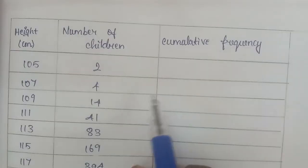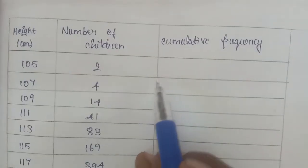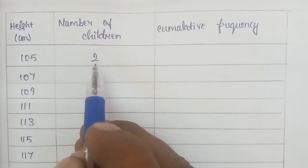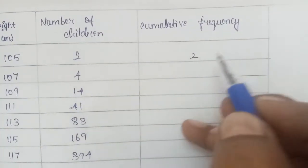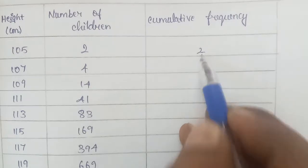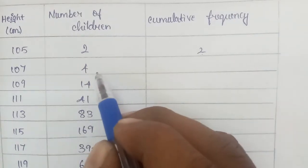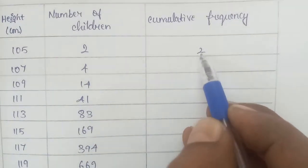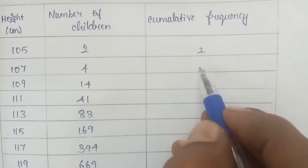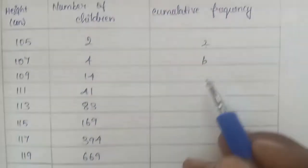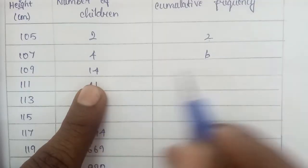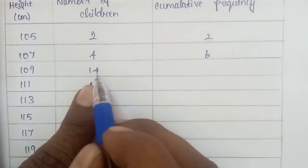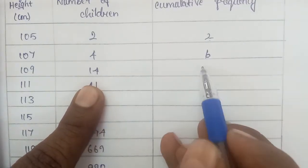The next column is cumulative frequency. So cumulative frequency entry — the first number of children is 2. The next one: 2 plus 4 equals 6. Then 6 plus the next value. In total so far, we have 6 and then 14.